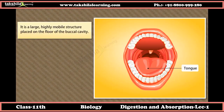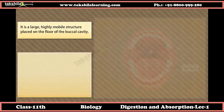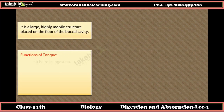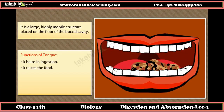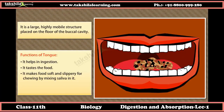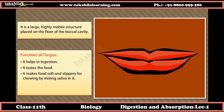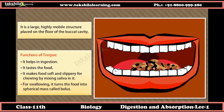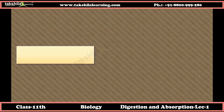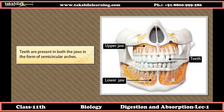The tongue is a large, highly mobile structure placed on the floor of the buccal cavity. It helps in ingestion, tastes food, mixes saliva into food to make it soft and slippery for chewing, and turns the food into a spherical mass called a bolus.